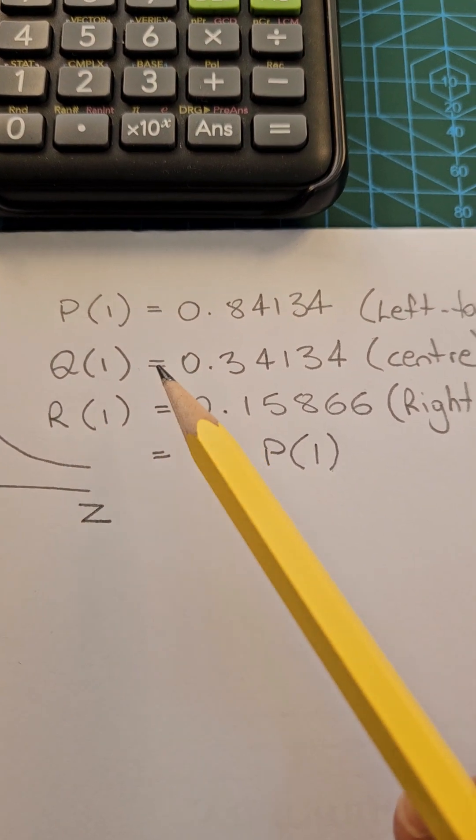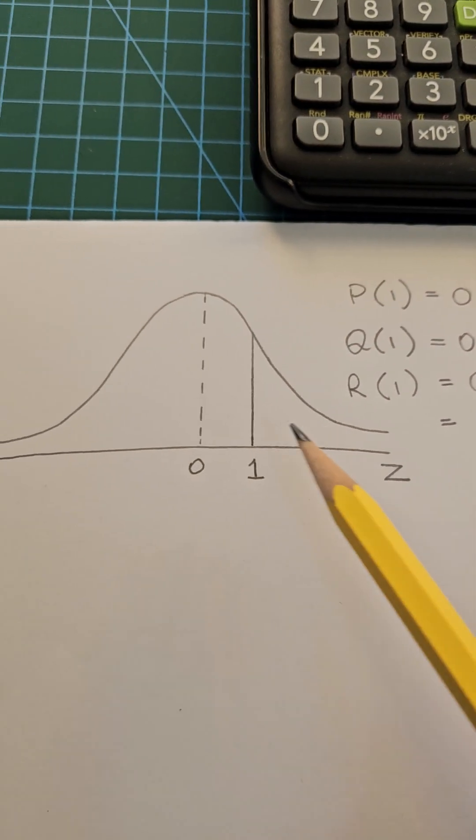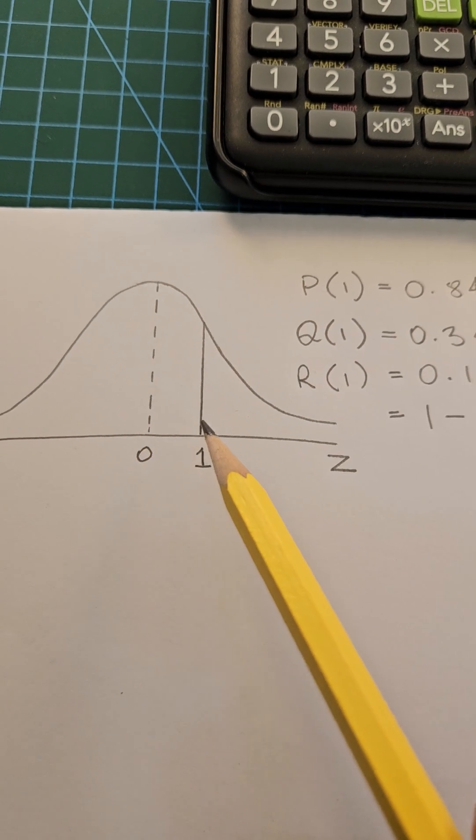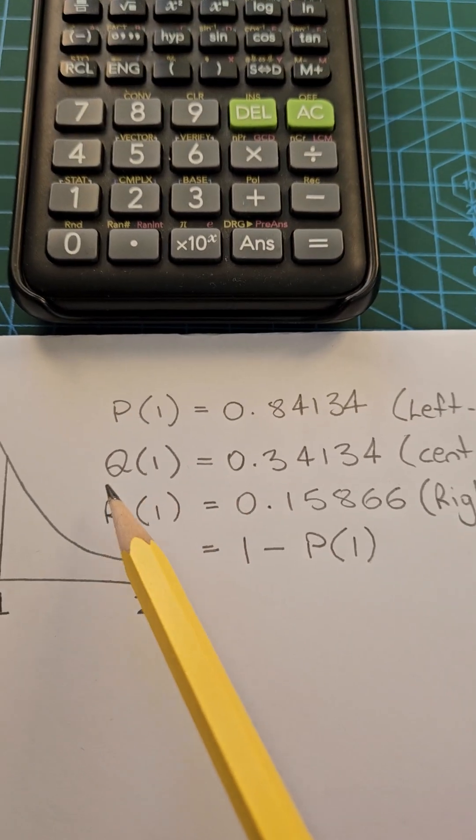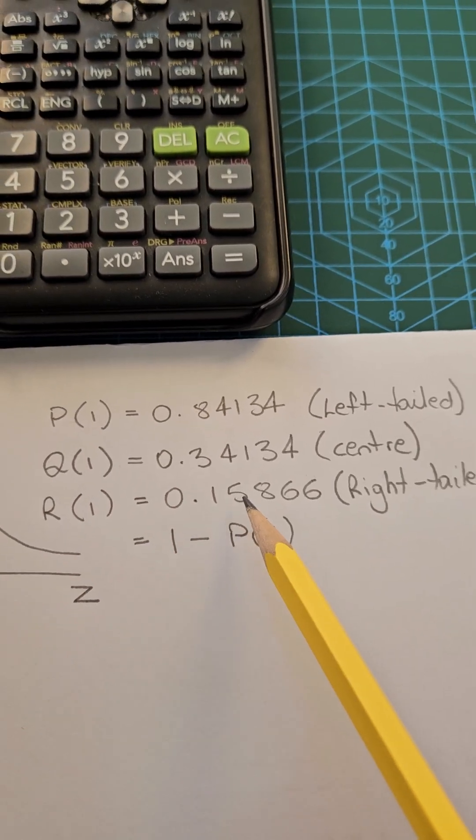Now q of one is 0.34134. That's the area from z equals zero to z equals one, and r of one is 0.15866.